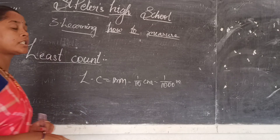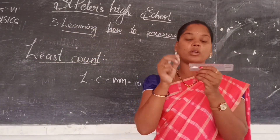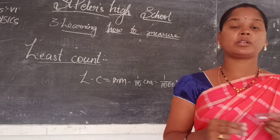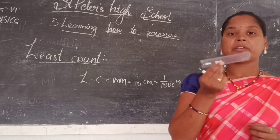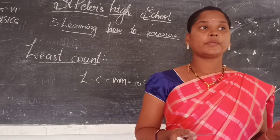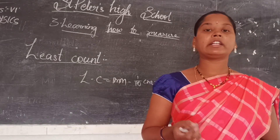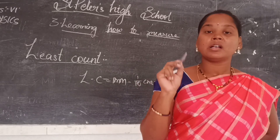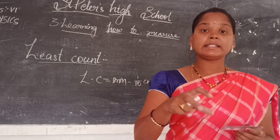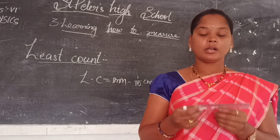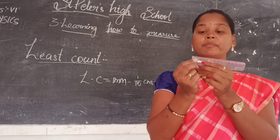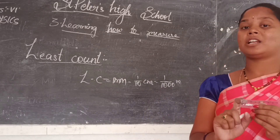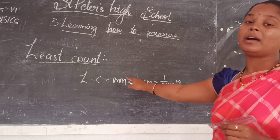Least count means whatever the smallest measurement the instrument has — less than that we cannot measure with that instrument. Just like a weighing scale also has a minimum level below which it cannot measure weight, this ruler also has a minimum value. Less than 1 millimeter cannot be measured on this scale. So millimeter is the last unit on the scale, and the least count of this scale is 1 millimeter.